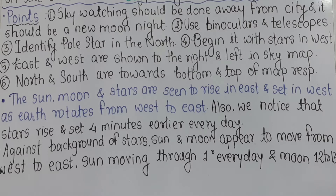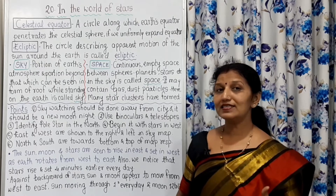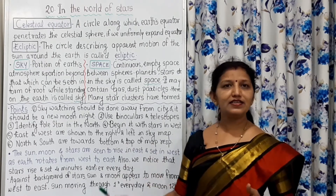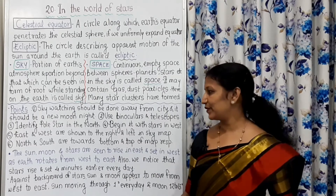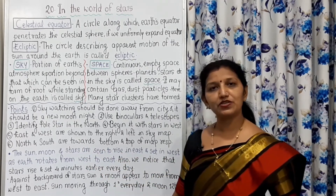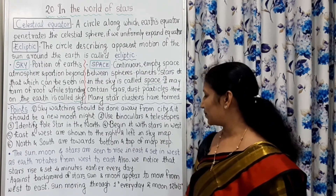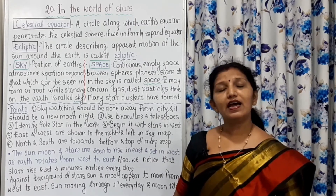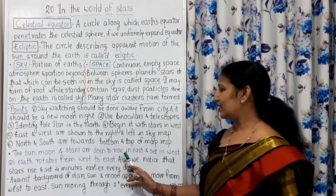On a sky map, east and west are shown to the right and left respectively, while north and south are towards the top and bottom respectively. The sun, moon, and stars are seen to rise in the east and set in the west.